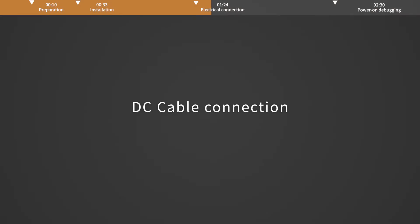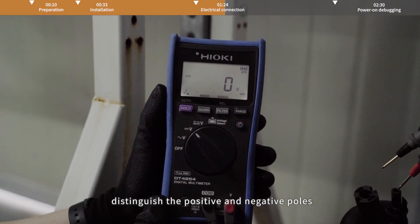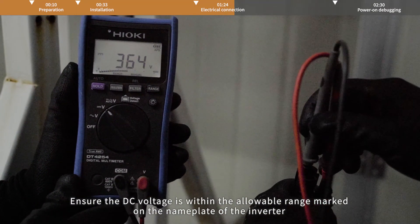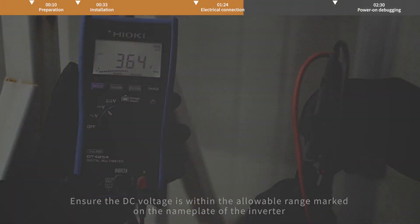DC cable connection. Please use a multimeter to measure the PV voltage of the DC input. Distinguish the positive and negative poles. Ensure the DC voltage is within the allowable range marked on the nameplate of the inverter.